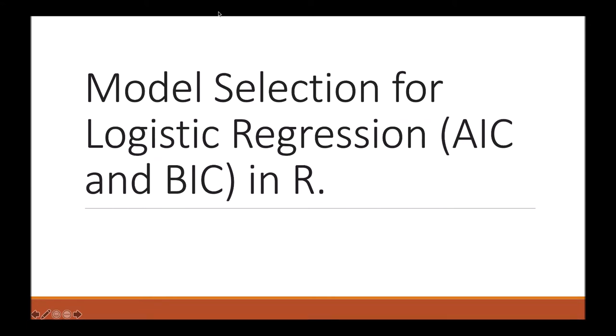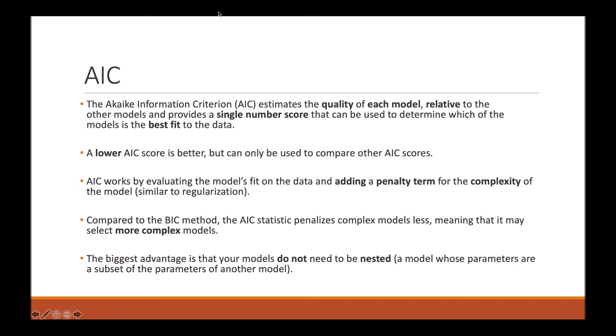This tutorial is going to demonstrate how to do AIC and BIC model selection for logistic regression in R. The AIC model selection estimates the quality of each model relative to the other models and provides a single number score that can be used to determine which of the models is the best fit to the data.